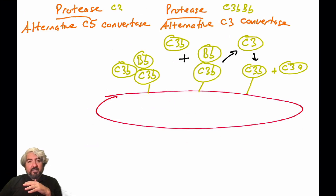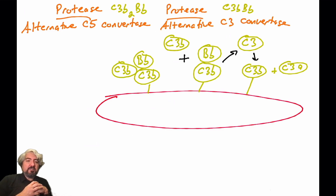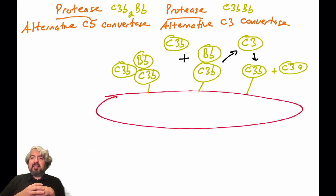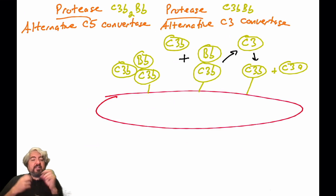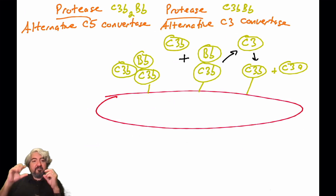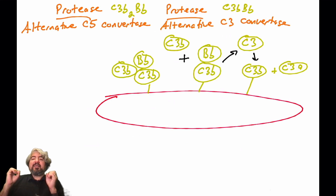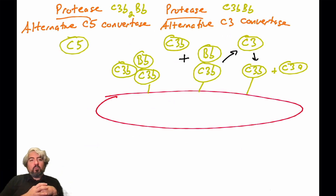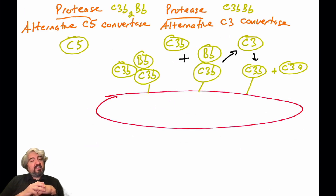To clarify: the alternative C3 convertase fixed to the surface of the pathogen is made of C3b and Bb. The new protease — the alternative C5 convertase — is made of C3b, another C3b, and Bb, and it is fixed to the surface of the pathogen. So one protease helped cleave components to make a new protease. What is the C5 convertase going to do? Well, it's in the name.